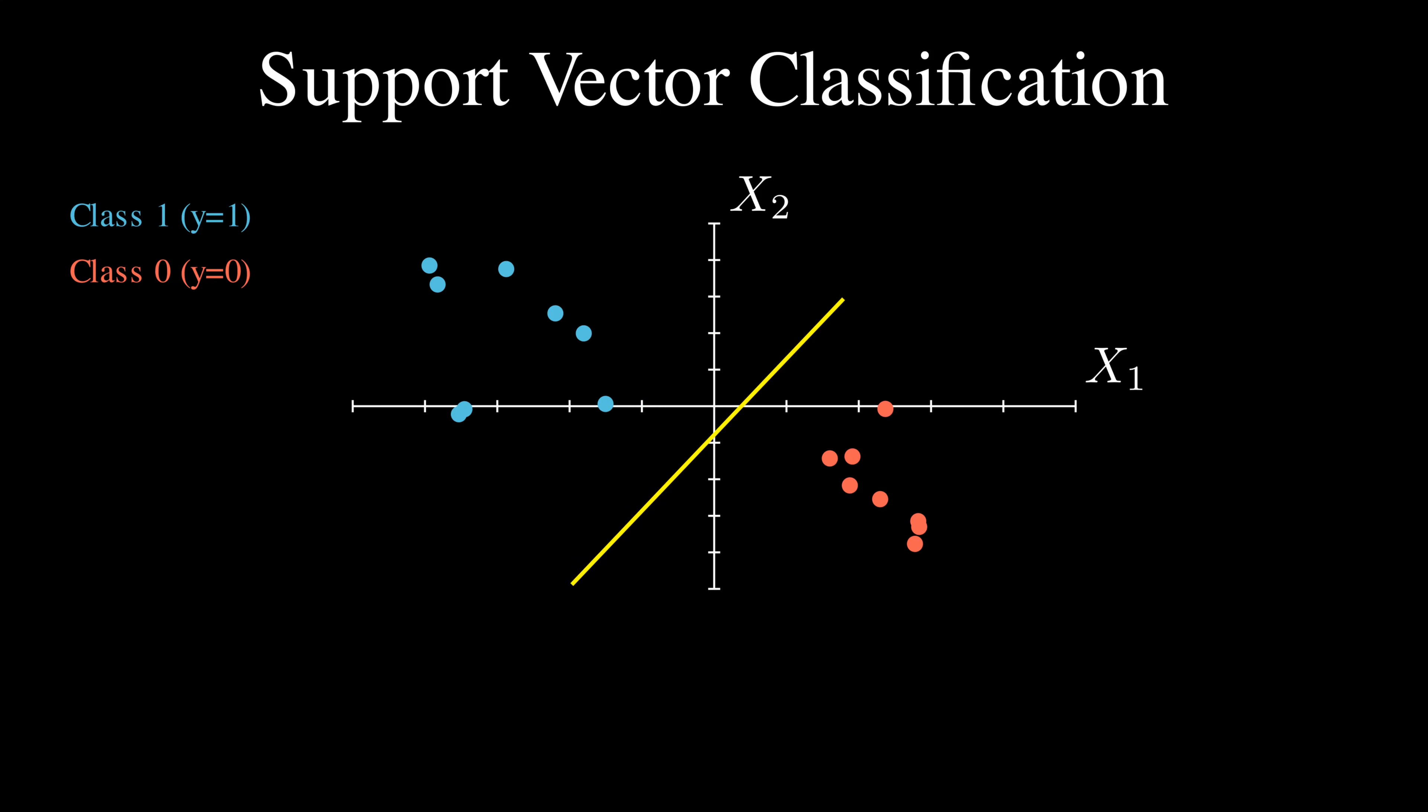But not just any line—we want the line that creates the maximum margin between the classes. This margin is the distance between the closest points from each class to the decision boundary. And these closest points are called support vectors. They are the only data points that actually matter for defining our boundary. If we were to move any other point without crossing the margin, our decision boundary wouldn't change at all.